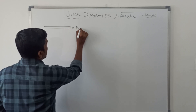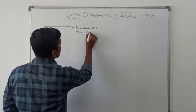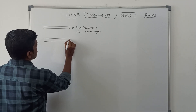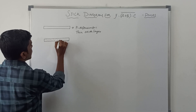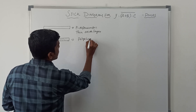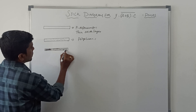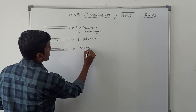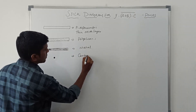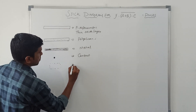The first element is called P-diffusion, or Thin-Oxide-Layer. This dotted rectangle box represents polysilicon. This shaded rectangle box represents metal. This dotted dark circle is called a contact. This dotted box is called implant.